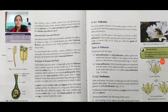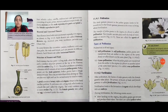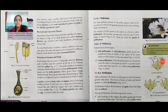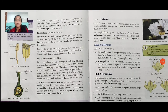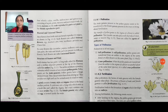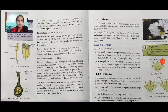Now, structure of stamen and pistil. Each stamen has two parts: a long stalk called the filament, and a swollen structure at the tip of the filament called the anther. The anther produces a powdery substance consisting of very minute pollen grains. Pollen grains are the male gametes. Pollen grains have a two-layered protective coat that prevents them from drying up.